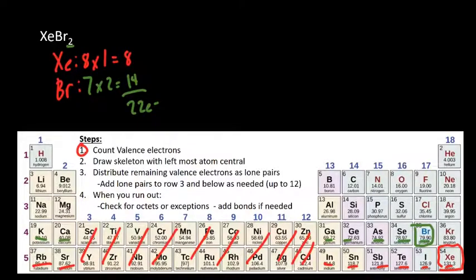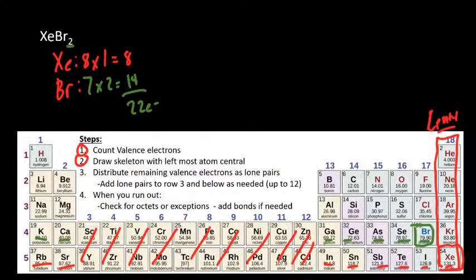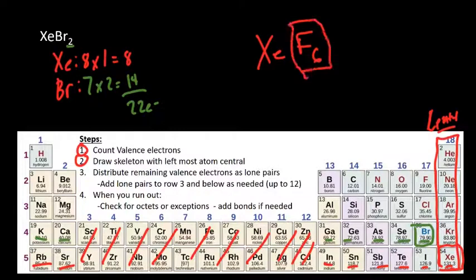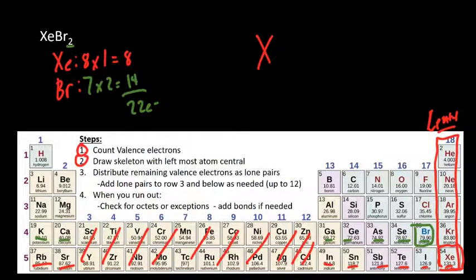Step 2: draw the skeletal structure. Now, whenever you see a noble gas, it's going to go in the center — everything in that column, if it's in a molecule, is going to be central. Also, if there's a bunch of one atom, those are going to be the terminal atoms. So there are 2 bromines — those are going to be terminal. A couple different ways to identify what's terminal. So let's put Xe in the center and tack on Br and Br.